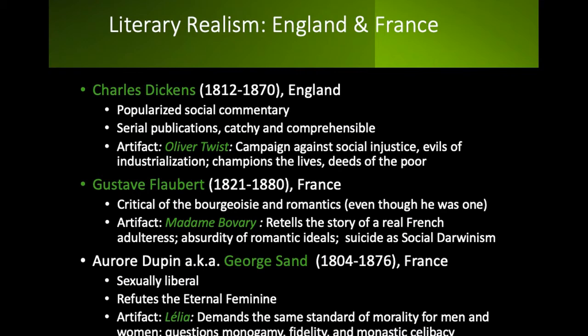One of his more famous works is Oliver Twist. The story exposes social injustice, the evils of industrialization, and shows the lives and deeds of the poor. The main character is the orphan Oliver Twist, and Oliver's innocence and suffering are relatable and compelling as he's placed in the care of an undertaker, works as a child laborer, and is exposed to poverty and crime. In the end, the crime in the tale is depicted as a result of society's failing, and the poor look heroic even when they're doing what's legally wrong.